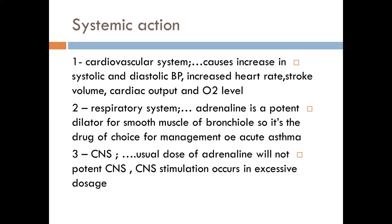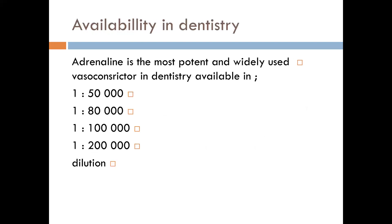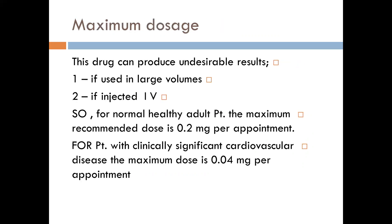Regarding the central nervous system, there is no significant effect at the usual dose, but at excessive doses it causes CNS stimulation. In terms of availability, we use it diluted inside the local anesthetic at 1:50,000 or 1:80,000; more commonly we use 1:100,000. As you can see on the label of the cartridge, the epinephrine concentration is 1:100,000.